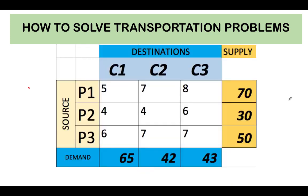In this problem, we are going to use the least cost method to allocate supply to demand. In the least cost method, the first thing we do is inspect the unit cost of moving goods from one facility to one destination. Among the costs, the number 4 appears twice as the two lowest costs. Since there are two of them, we can randomly select either value. Let's select this first value — row 2, column 1.